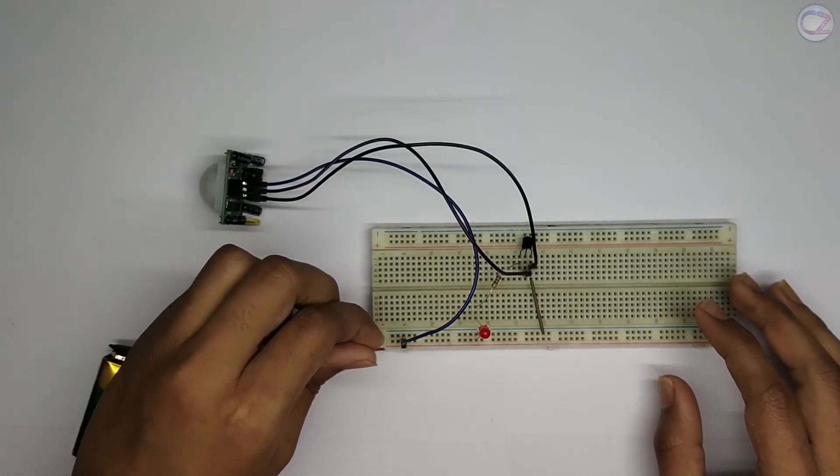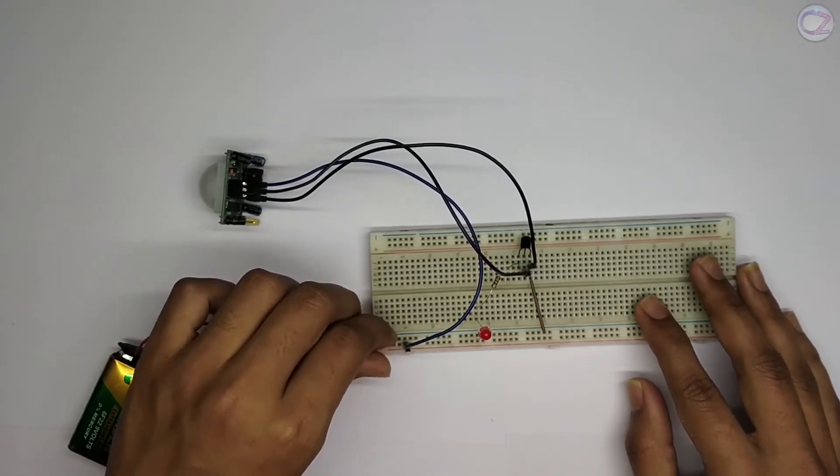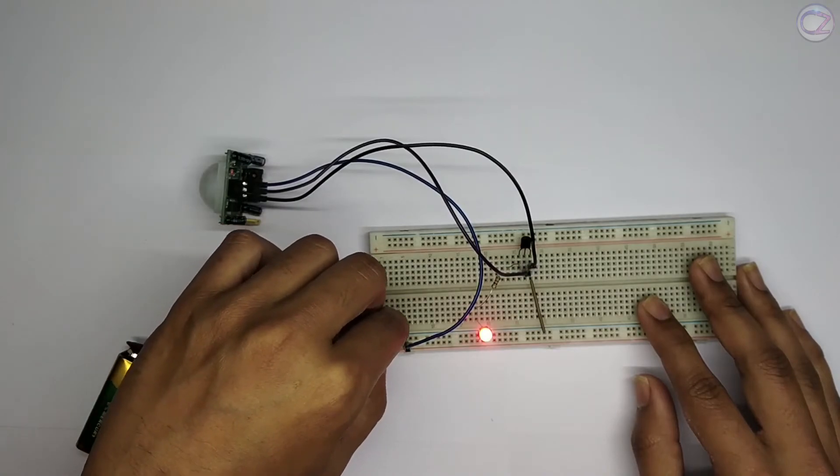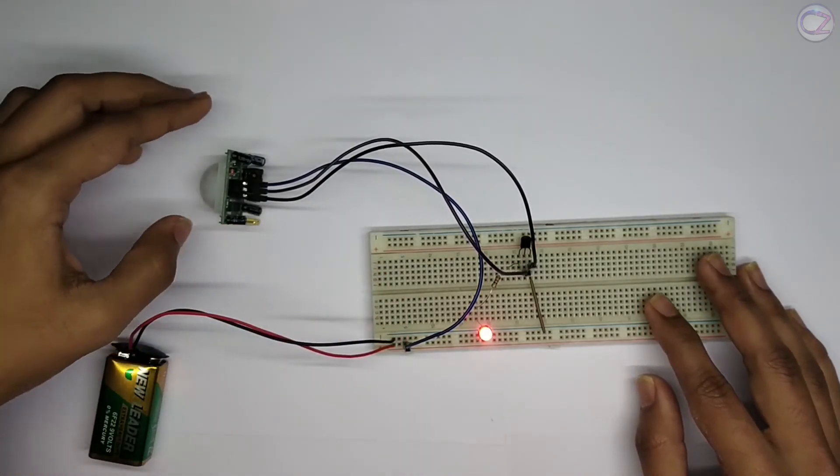Now connect the source. I'm using a 9-volt battery. Okay, this circuit is ready. Let's check it out.